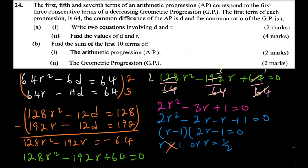Substituting r = 1/2 into the equation 64r minus 4d equals 64: 64 times 1/2 equals 32, so 32 minus 4d equals 64. Rearranging gives 4d equals minus 32, and dividing both sides by 4 gives d equals minus 8.